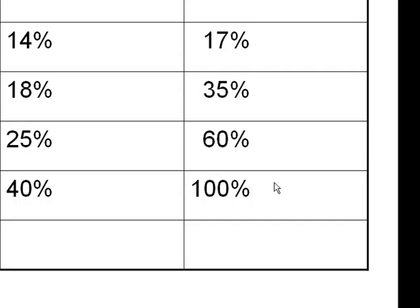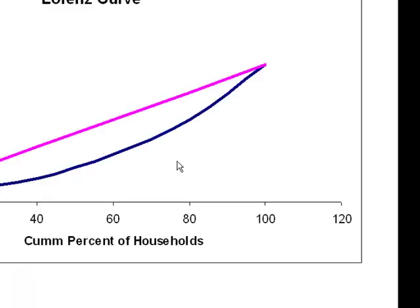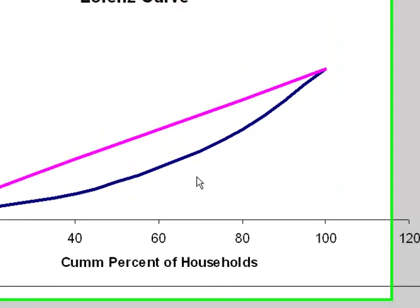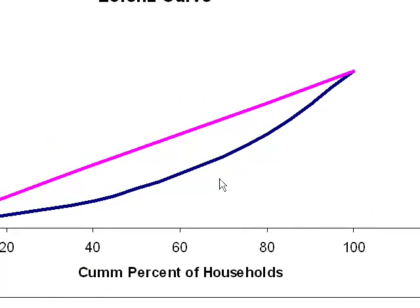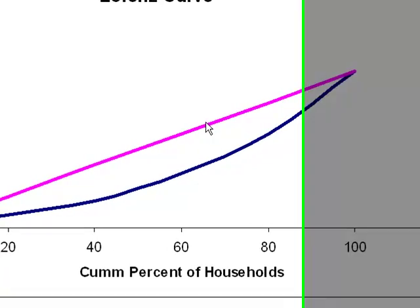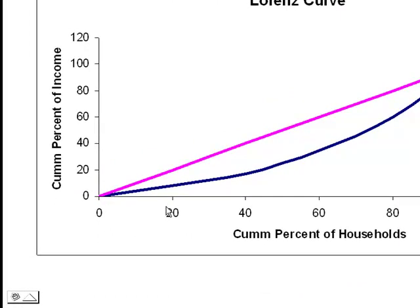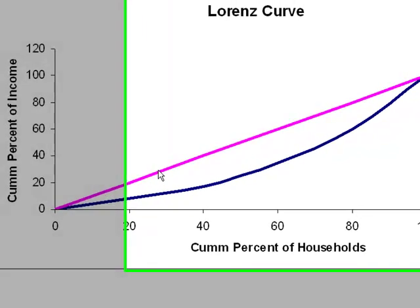Next, I simply construct and plot the data for the Lorenz curve. The blue curve is the Lorenz curve. The pink line is the line of perfect equality. In other words, if 20% of the income earners receive 20% of the pie, and 40% of the income earners receive 40% of the pie, income would be divided equally, and the result would be a straight line.